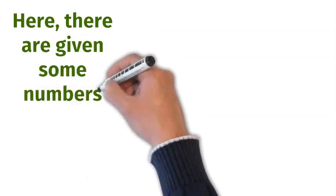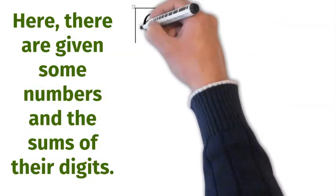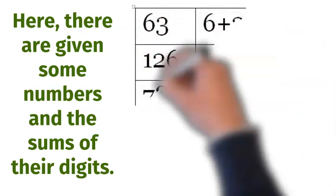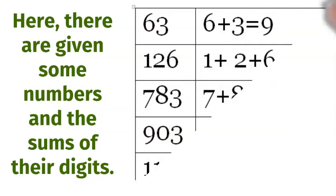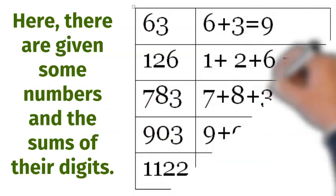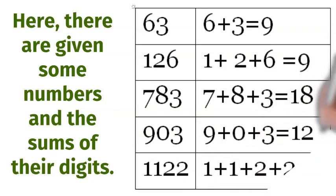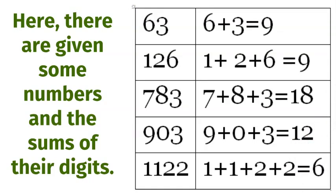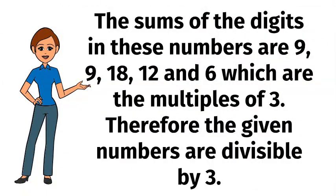Here we have given some numbers and the sums of their digits. The numbers are 63, 126, 783, 903, and 1122. The sums of the digits in these numbers are 9, 9, 18, 12, and 6, which are the multiples of 3. Therefore, the given numbers are divisible by 3.